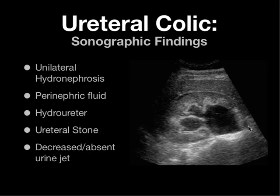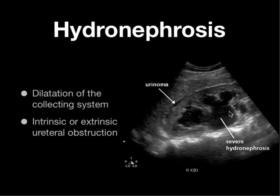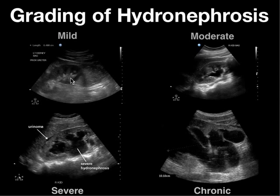Hydronephrosis is a dilatation of the collecting system. Make sure you can connect the minor into the major calyces into the pelvis so you're not confusing multiple renal cysts for hydronephrosis — confirm that all the tributaries connect. Remember this can be due to either intrinsic or extrinsic ureteral obstruction.